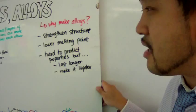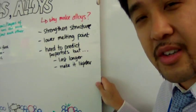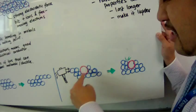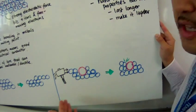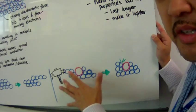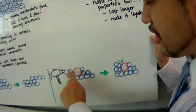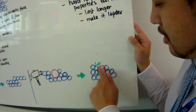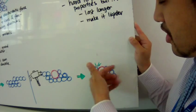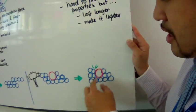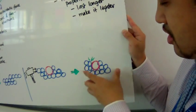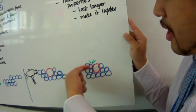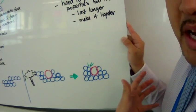Why are alloys stronger? Here's another diagram. The yellow spheres are the base metal and an impurity has been added. If you push on the first layer, the base metal ions will knock into the impurity ion — and because the impurity is a different size, the layers can't slide past each other. The impurity prevents the layers of positive base metal ions from sliding, which is what makes the alloy stronger and harder.